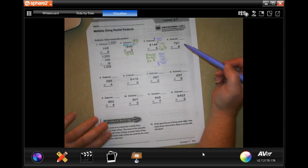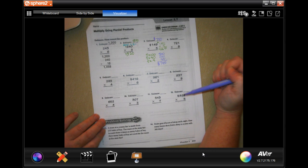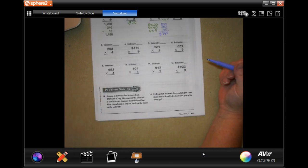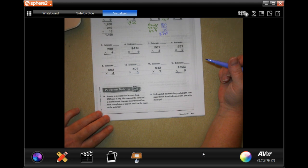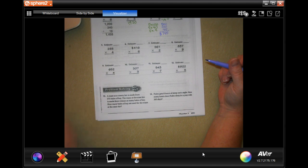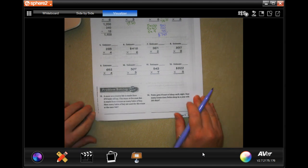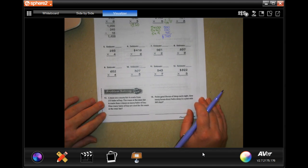All right, you guys do 4 through 12. We are going to go down and do number 13. A maze at a county fair is made from 275 bales of hay. A maze at the state fair is made from 4 times as many bales of hay. How many bales of hay are used for the maze at the state fair? Goodness.